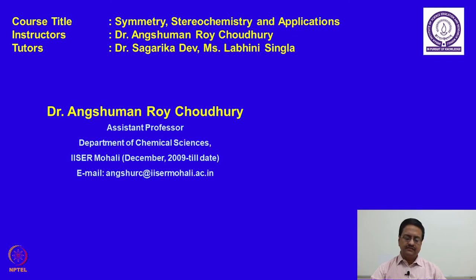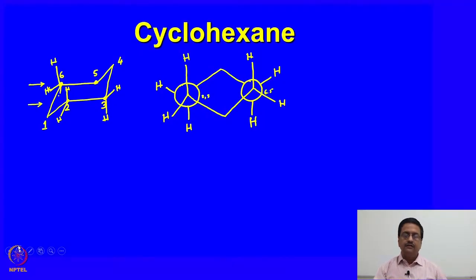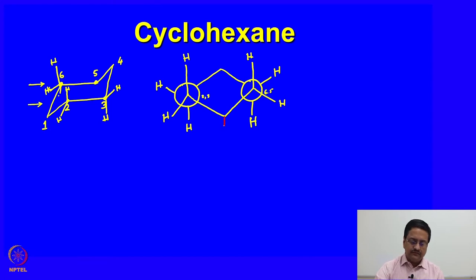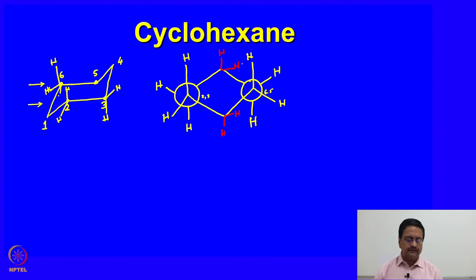In the previous lecture, we were discussing about the conformation of cyclohexane in the chair form, and then we were trying to understand how we can draw the molecule using the Newman projection. As you have seen, these two hydrogen atoms which are on the central carbon atoms are like that, and this is how you should draw the chair form of the cyclohexane molecule.